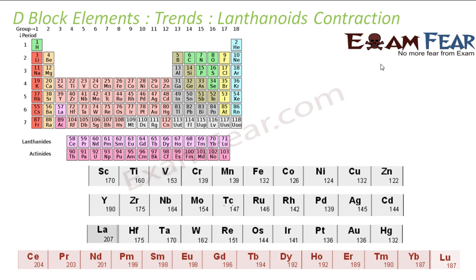Lanthanide contraction is the greater than expected decrease in the ionic radius of the elements in the lanthanide series, from atomic number 57 to 71. From cerium to lutetium, there is a huge decrease in the atomic size: 204, 203, 201, 199 — again decreasing.